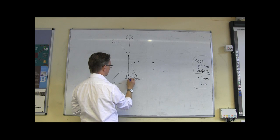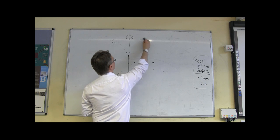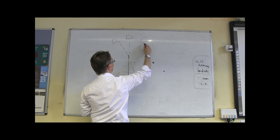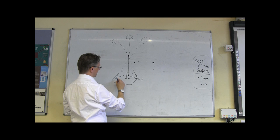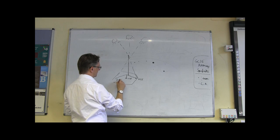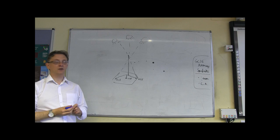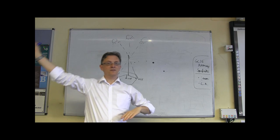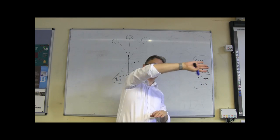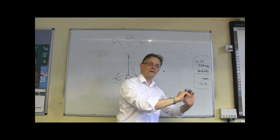That might be 11:45, let's say. And then a bit later on, the sun's over here, and it produces a shadow over there, which is 12:15. As the sun moves over from east to west, the shadow is going to get shorter.